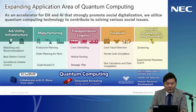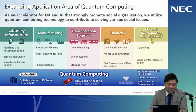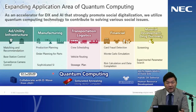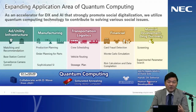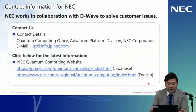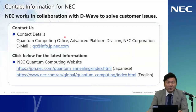NEC is targeting verticals including infrastructure, manufacturing, transportation, logistics, financial, material development, and drug discovery. Our products are D-Wave and the simulated annealer from NEC. We also verify applicability in field sites, run hands-on seminars, and support the development of human resources. If you have interest, questions, or comments, please contact NEC through our website.